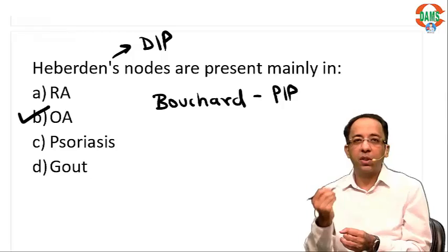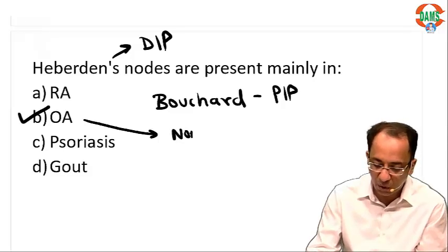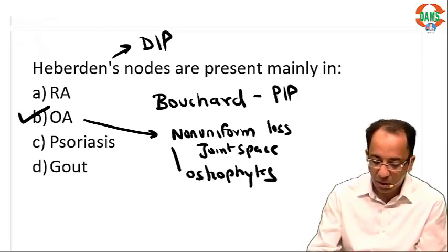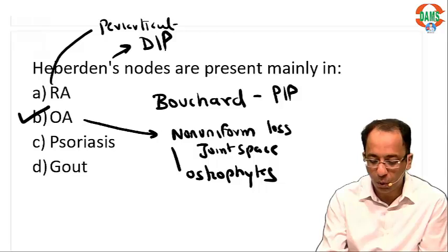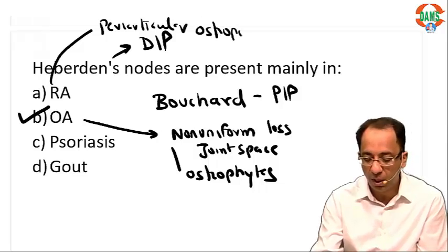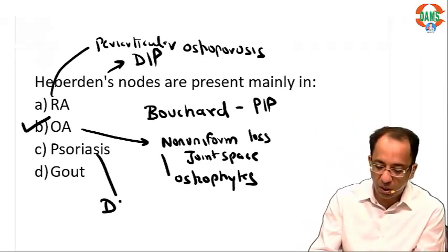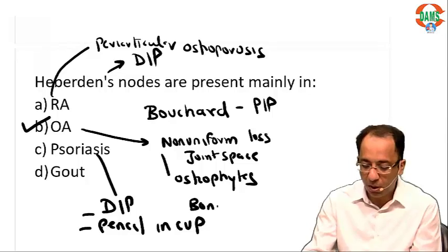Other MCQs they can ask in future exams: in osteoarthritis, look for non-uniform loss of joint space and presence of osteophytes. In rheumatoid arthritis, the key finding to remember is periarticular osteoporosis — that is the first X-ray finding and very important. Psoriasis involves the DIP joint; remember the pencil-in-cup appearance, and importantly, bone density is normal.